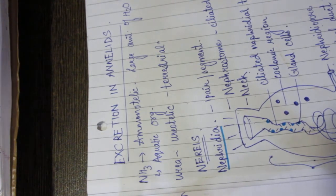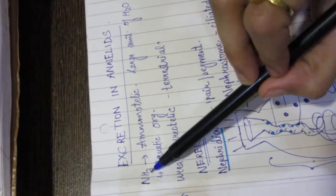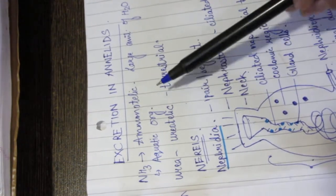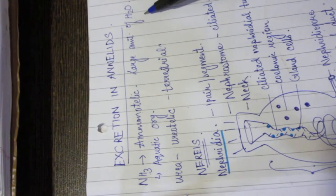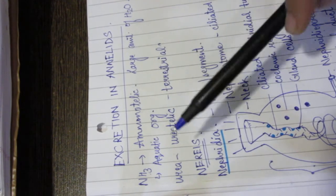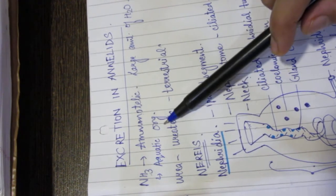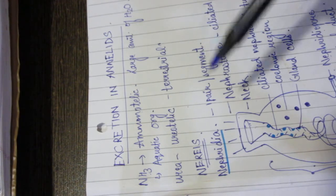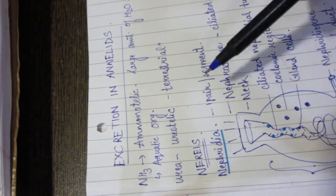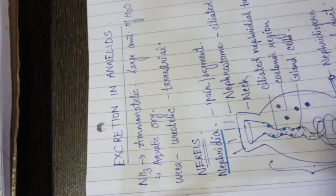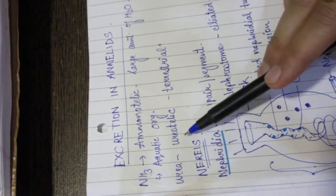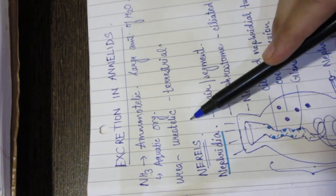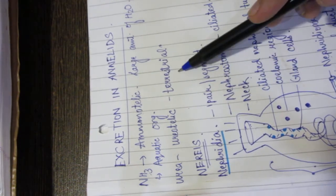Before annelids, we will see that organisms excrete ammonia — we call them ammonotelic — and a large amount of water is needed to excrete it, which is why only aquatic organisms can do so. Terrestrial organisms like humans excrete urea because there is less water available, so it is more affordable.